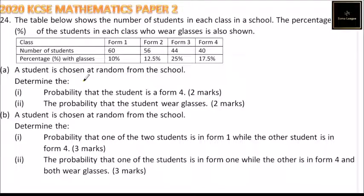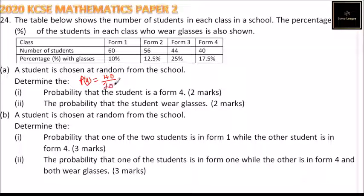Determine the probability that the student is a Form 4. There are 40 students in Form 4. Adding up all students: 60 + 56 + 44 + 40 gives a total of 200 students. So the probability is 40 over 200, which simplifies to 1 over 5, or 0.2.